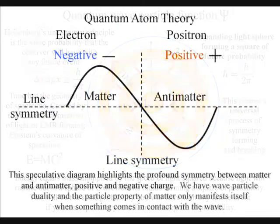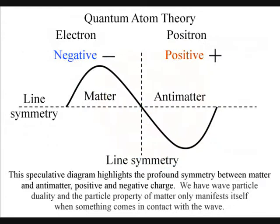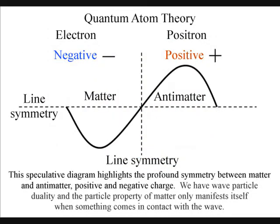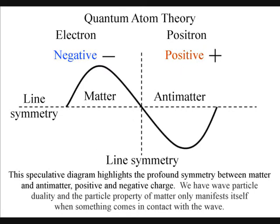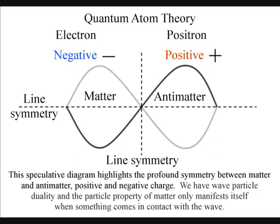Everything that is part of this infinite process will have line symmetry, including matter and antimatter, positive and negative electric charge, forming symmetry between electricity and magnetism, forming electromagnetic fields.